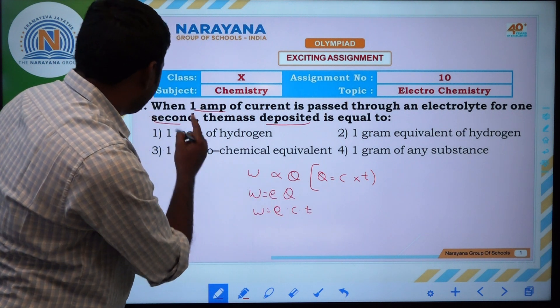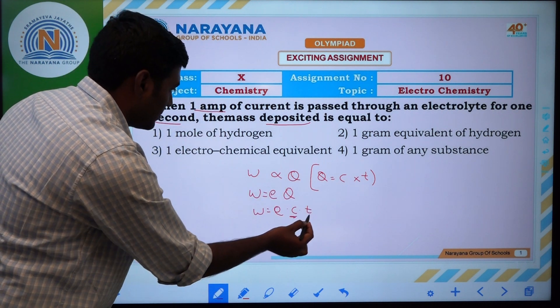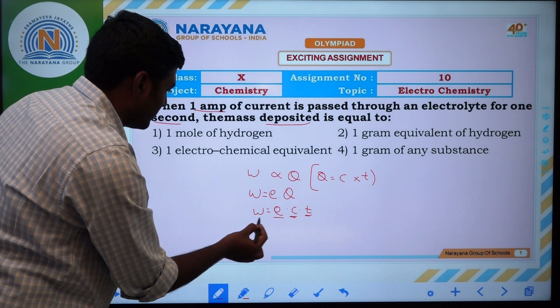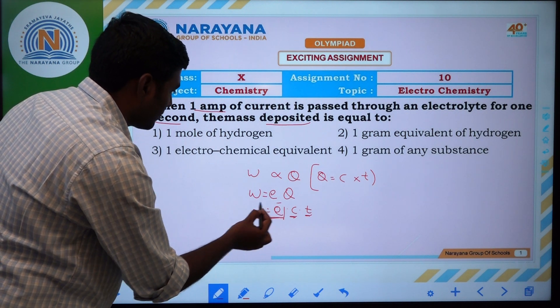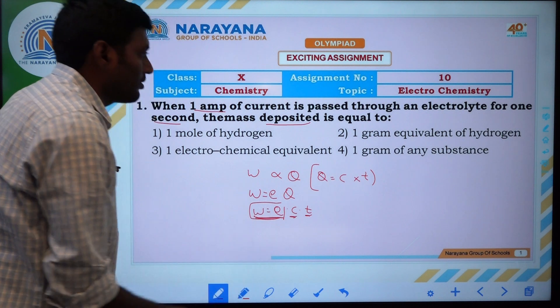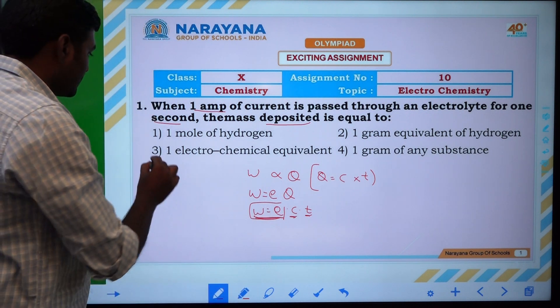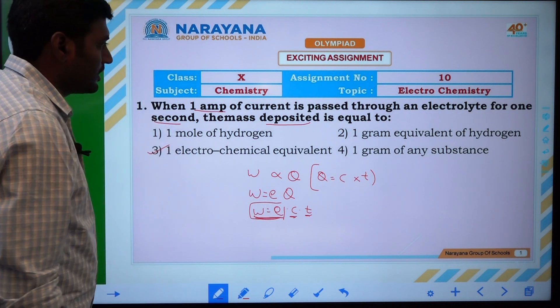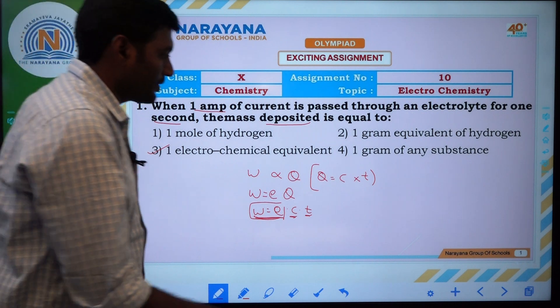When current is one ampere, it is one. Time one second. Then weight of the substance is equal to electrochemical equivalent. It is first one, electrochemical equivalent. We will go for the next second question.